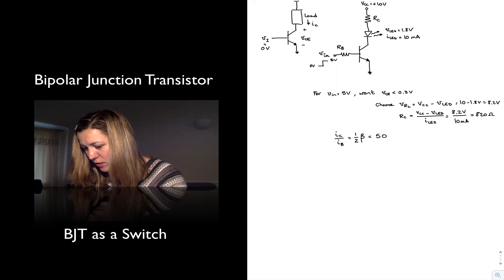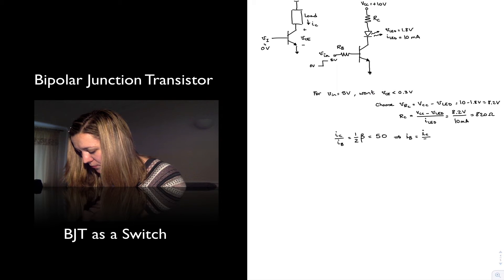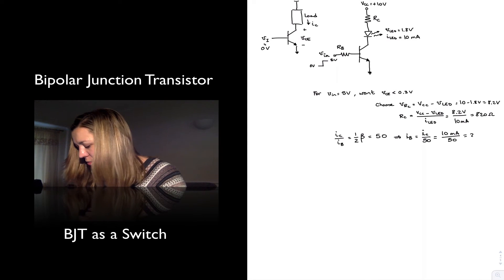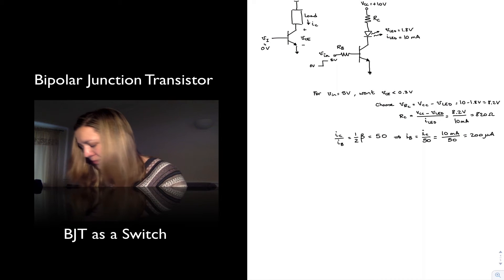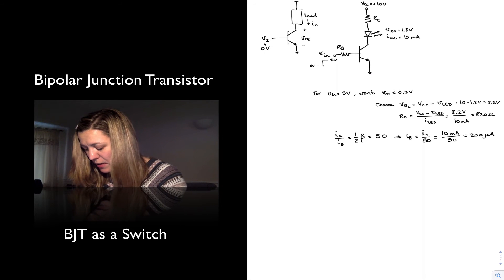So this will be, if we assume beta equal to 100, this will be 50. And so we have that my IB will be equal to IC over 50, or 10 milliamps over 50, which is 200 microamps.